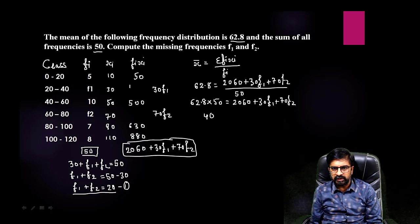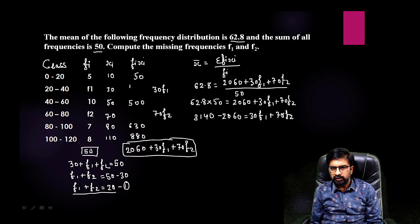3140 minus 2060 is equal to 30 f1 plus 70 f2. To reduce this you can take out 10 common also. Let me subtract this, 0 minus 0 is 0, 14 minus 6 is 8, 0 minus 0 is 0, 3 minus 2 is 1. And here take out 10 common, then 3 f1 plus 7 f2.